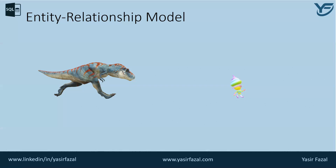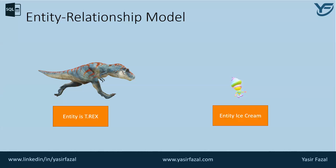In this diagram I have two things: one is T-Rex and the second one is Ice Cream. Basically what I am trying to say is that T-Rex is one entity and Ice Cream is another entity. So in the real world there are two entities: Ice Cream and T-Rex.